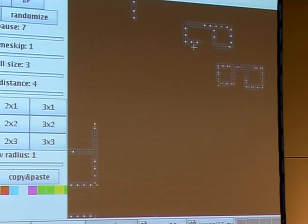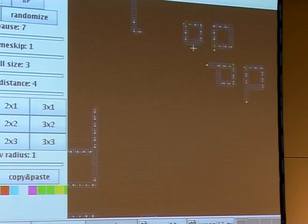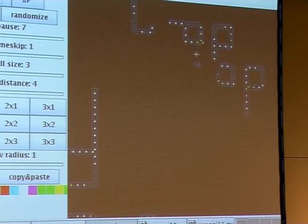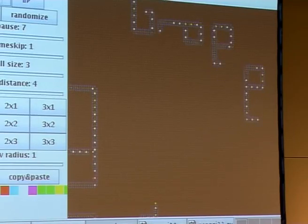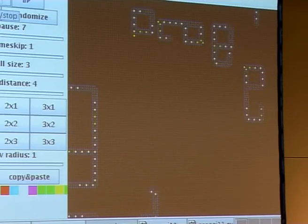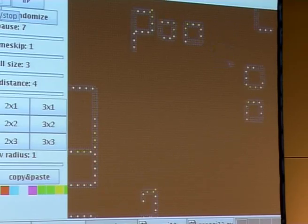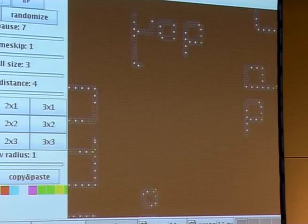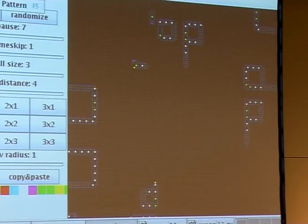So from time to time, you will get smaller loops that are able to reproduce. And because the loops are smaller, they can reproduce faster. And eventually, the whole space is conquered by the smaller loops.